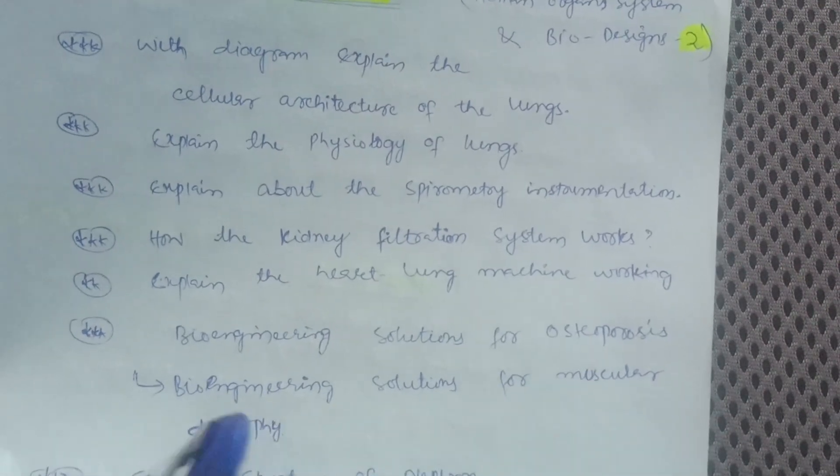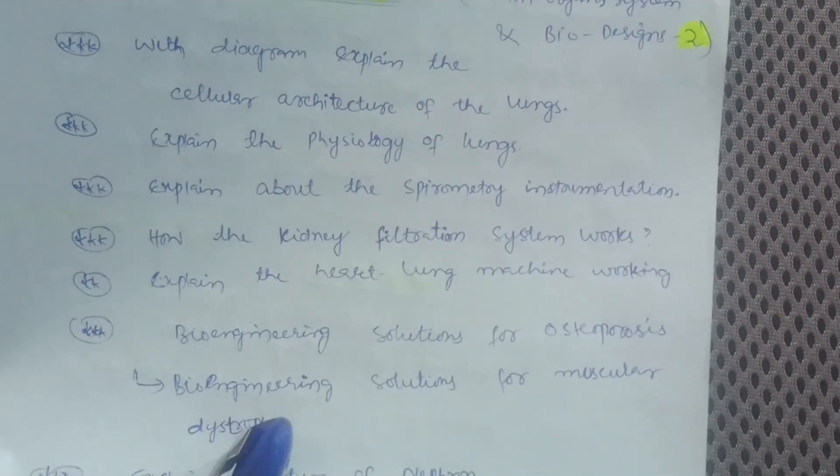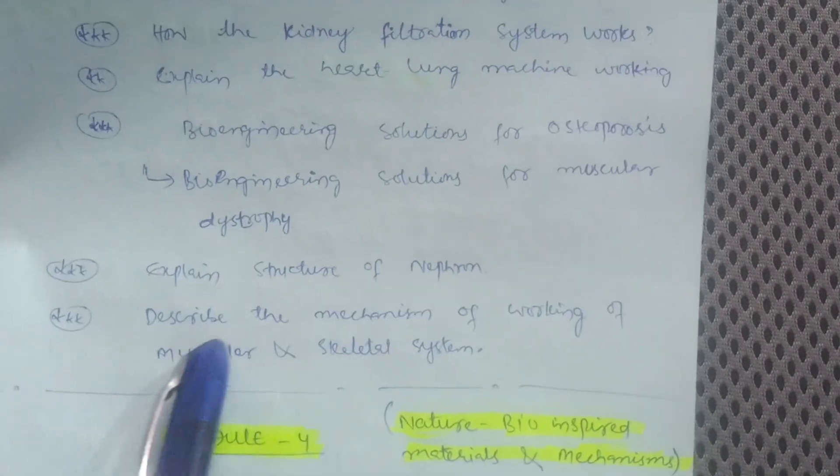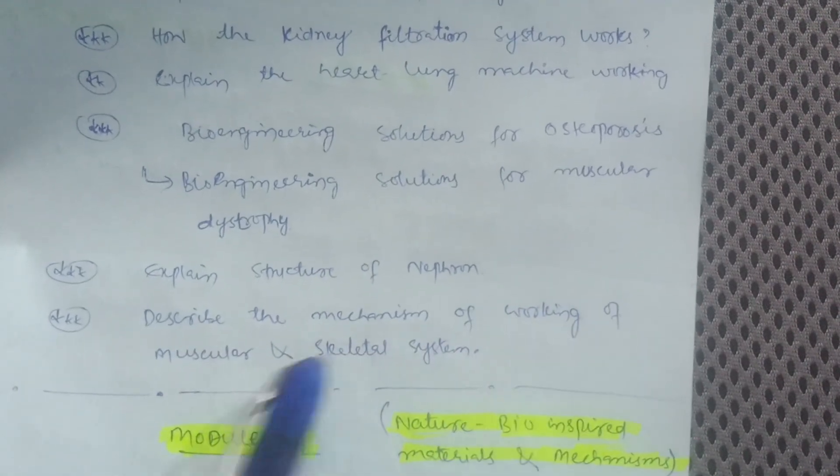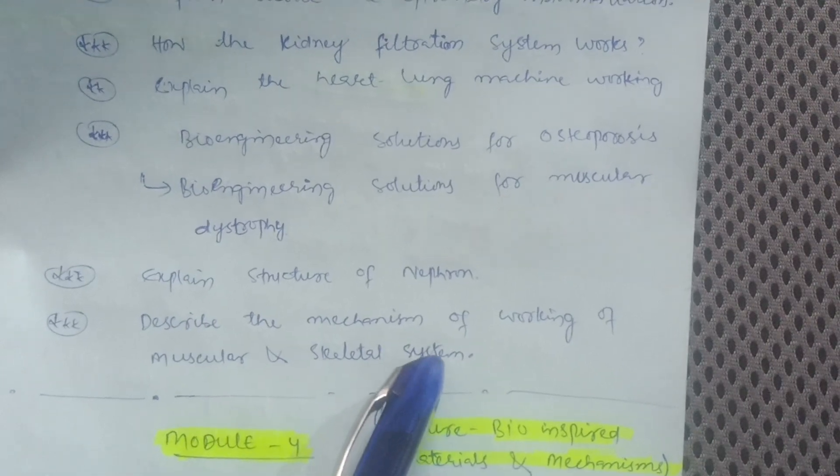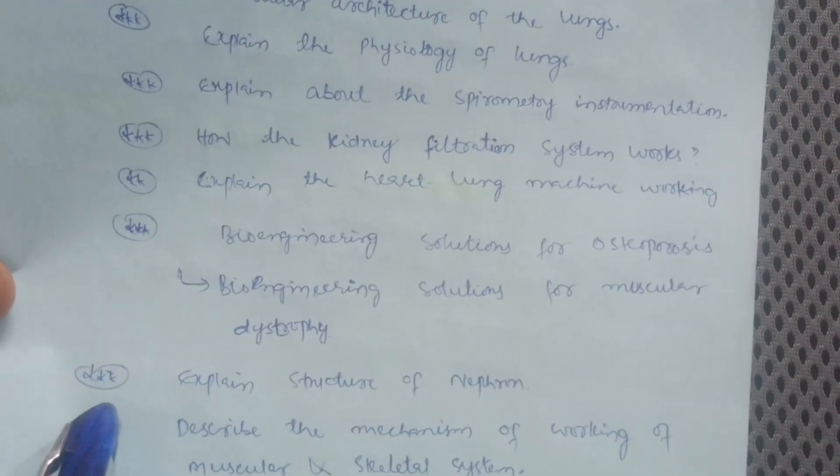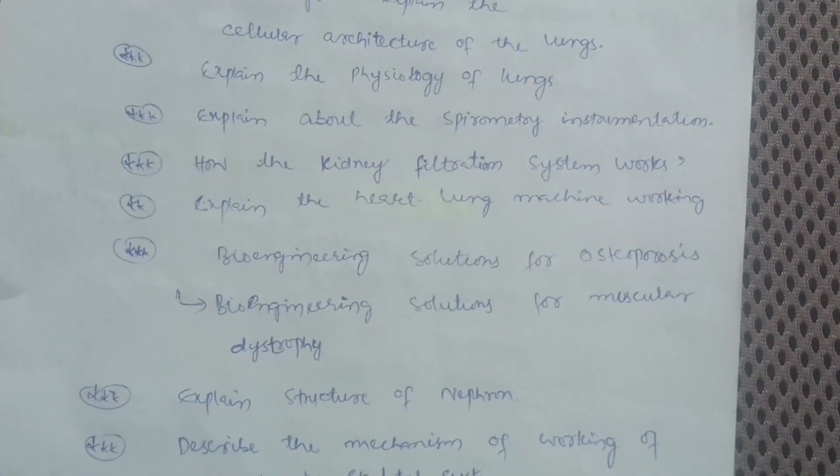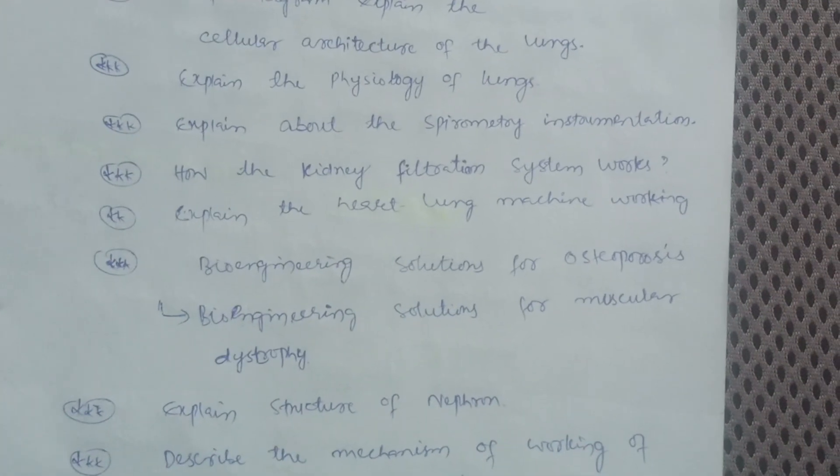Explain the heart lung machine working and bioengineering solutions for osteoporosis, which is the most important question. You have to focus on this particular part. Bioengineering solution for muscular dystrophy. Then explain structure of nephron and describe the mechanism of working of muscular and skeletal systems.